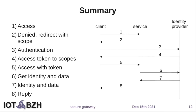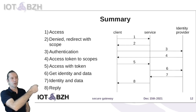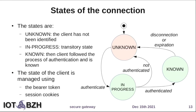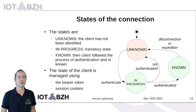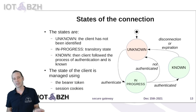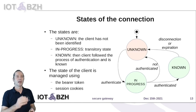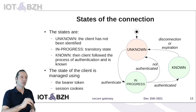This is the summary of the conversation between the client, the service, and the identity provider — a graphic briefly explaining what was described. The state of the connection is managed: at the beginning you are unknown, then you enter an authentication process, and either you are authenticated or not. Once known, the system knows what resources you can access. At the end, on expiration or explicit or implicit disconnection, the connection is turned back to unknown.